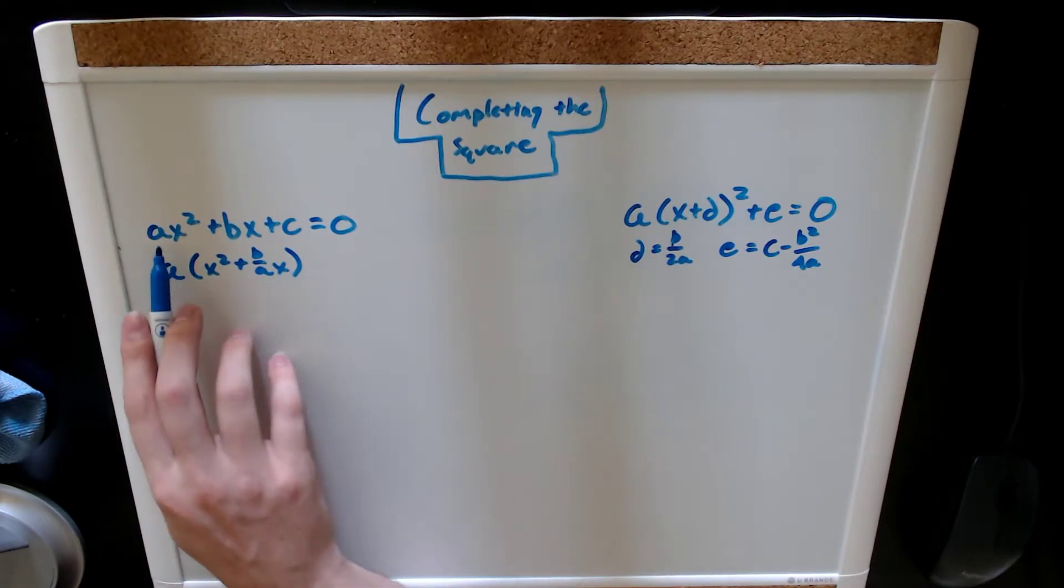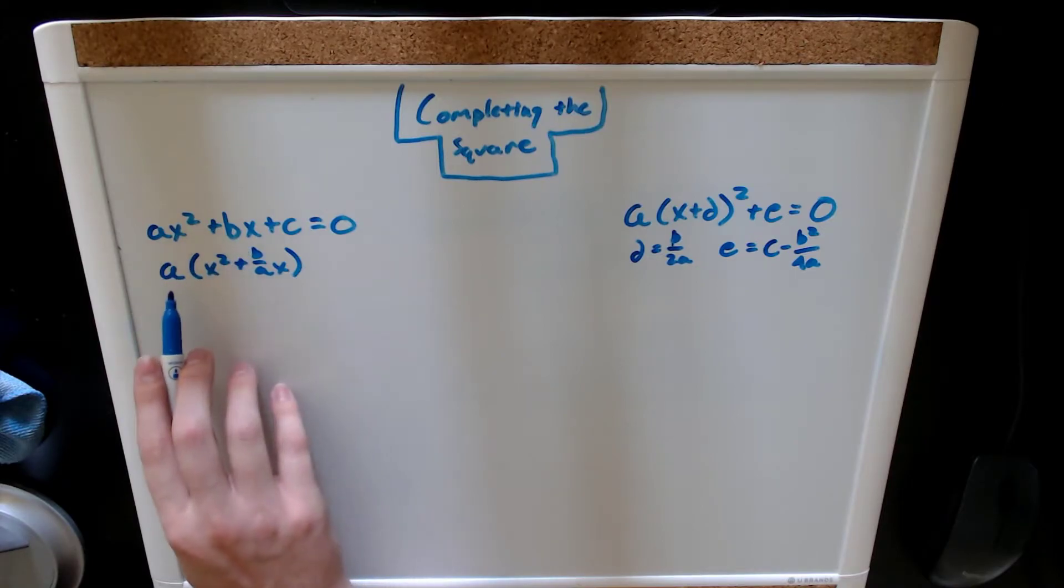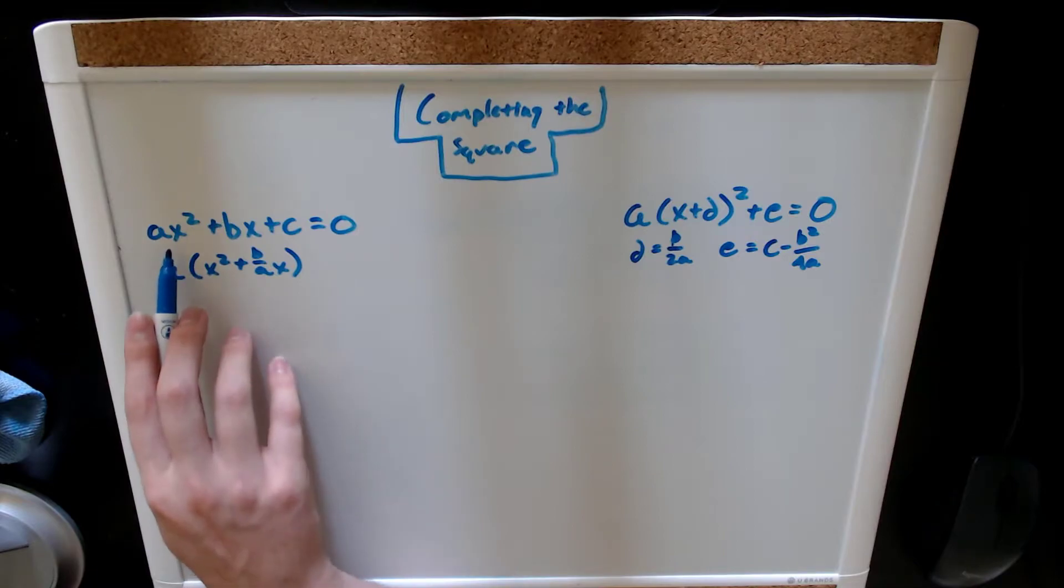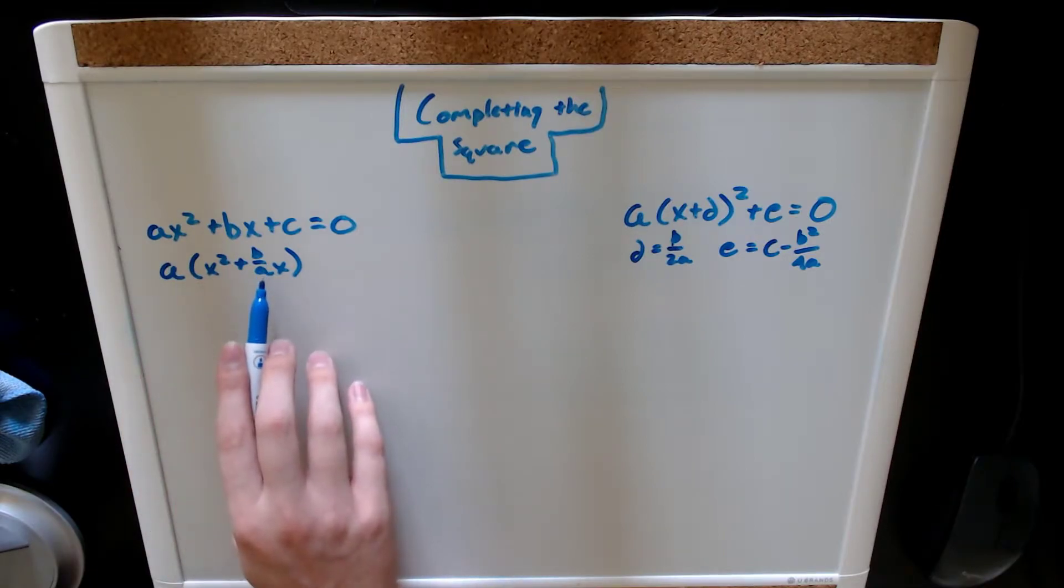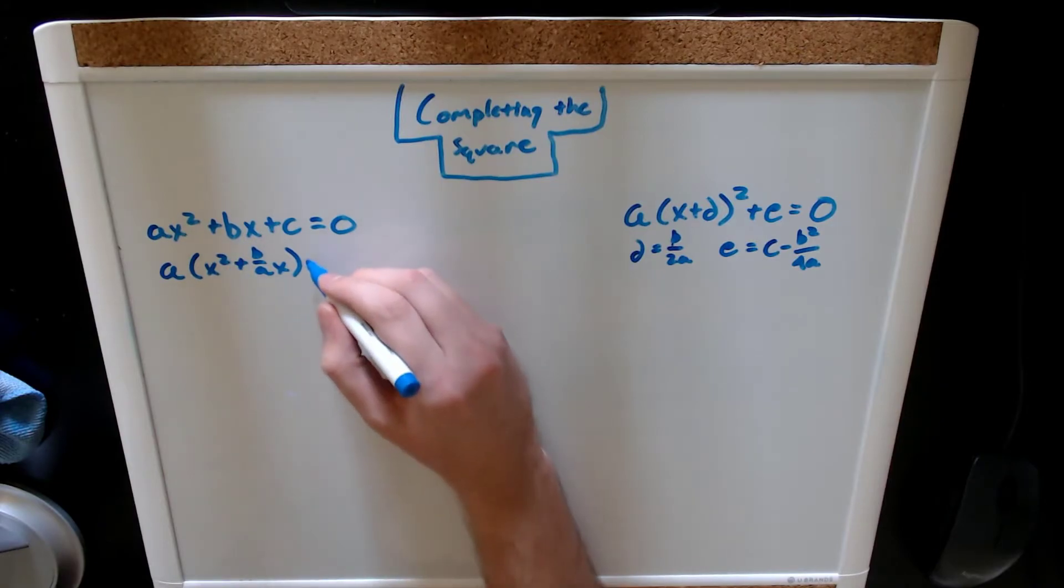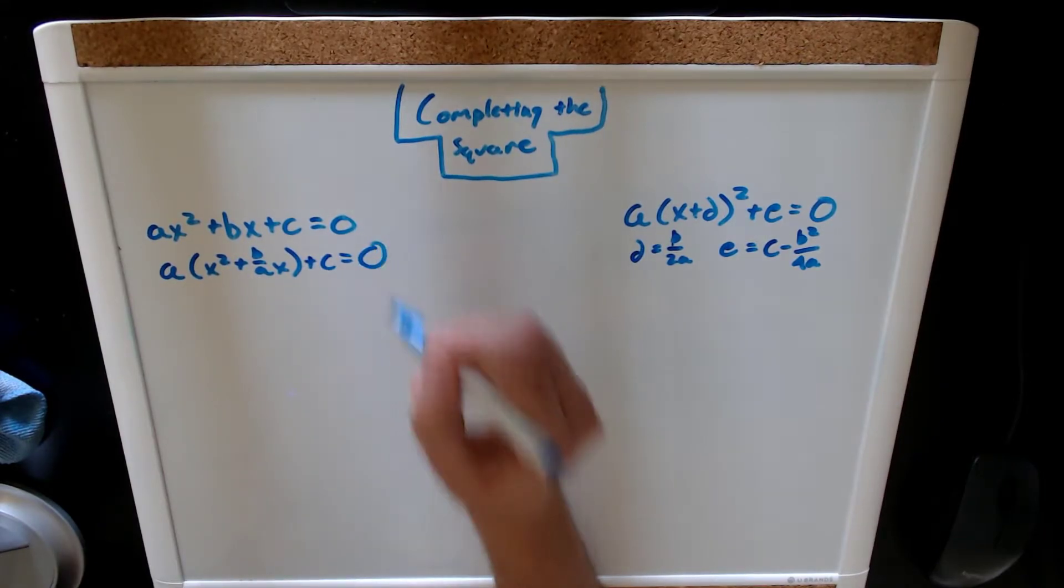Why? Because we divided these two terms by a. Because if we multiply these right back out, we get ax squared plus b over a times a, which is bx. We can bring down our c and set it equal to zero.